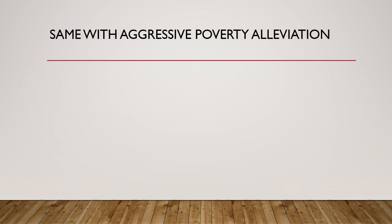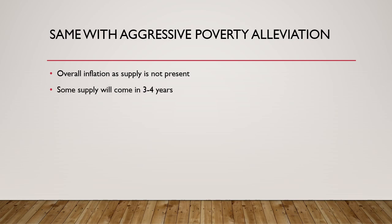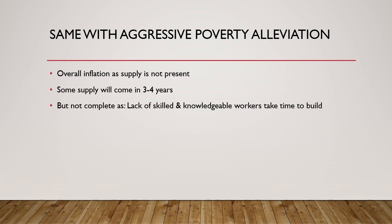Similarly, if the government spends aggressively on poverty alleviation, demand will increase and supply will not be able to catch up immediately — this increases inflation. Sure, some supply would come on board in three to four years, but it will not be sufficient, because again there is a lack of human capital. Some basic supply can come online, but beyond that, skilled and knowledgeable workers are required to produce goods — and since we have hit the boundary limits with no slack of labor available in the economy, inflation increases in this case as well.